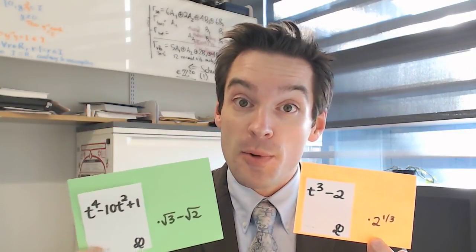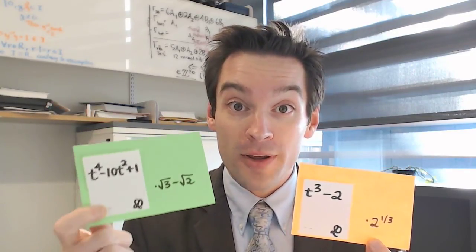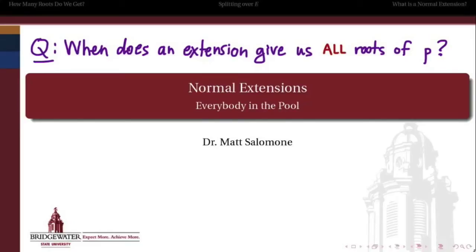Those extensions we will call normal extensions. So the question is: when does an extension give us all the roots of a polynomial which was previously irreducible?